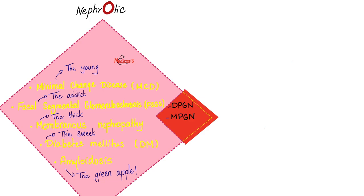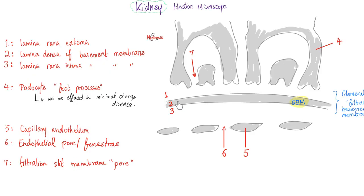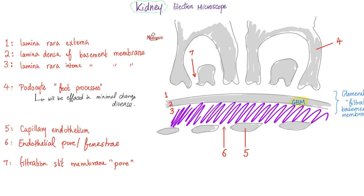Diffuse proliferative glomerulonephritis is both nephrotic and nephritic, and your patient has lupus. Looking at the basement membrane: here you have the epithelium, here is the endothelium. In diffuse proliferative glomerulonephritis, you will have immune complex deposition underneath the endothelium — called subendothelial immune complex deposition. On immunofluorescence under an electron microscope, these deposits cluster in what we call a granular pattern.